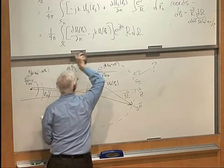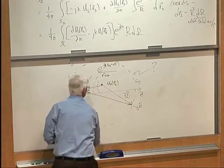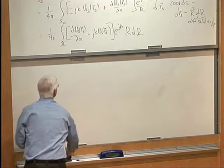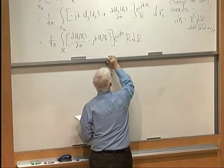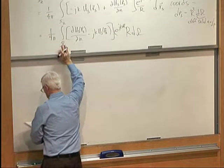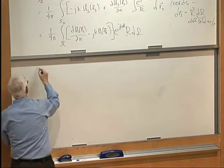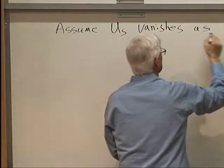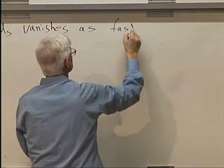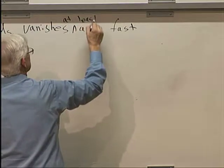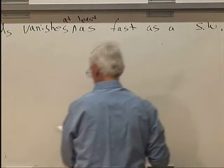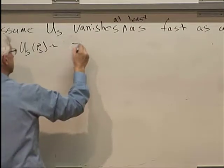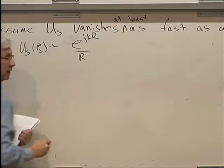So, we'd like to say that this guy goes to zero so that we can ignore it. We can't quite say that yet. Now, what we're going to assume is that US vanishes as fast, vanishes at least as fast as a spherical wave. So, US of RS is at the slowest decay equal to an expanding spherical wave. Then the limit as R approaches infinity of this bracketed term times the rest of the integrand.